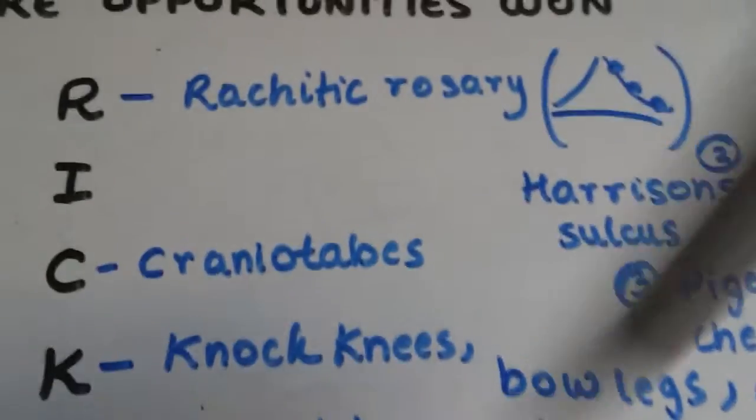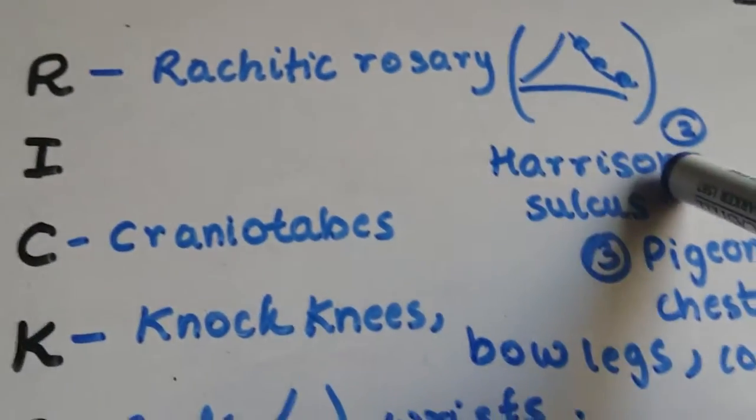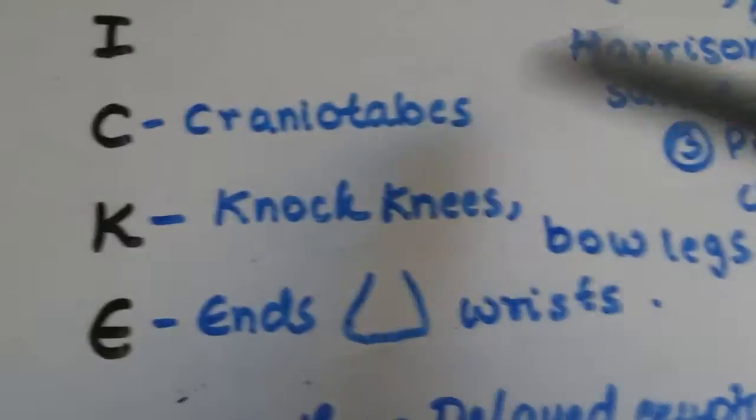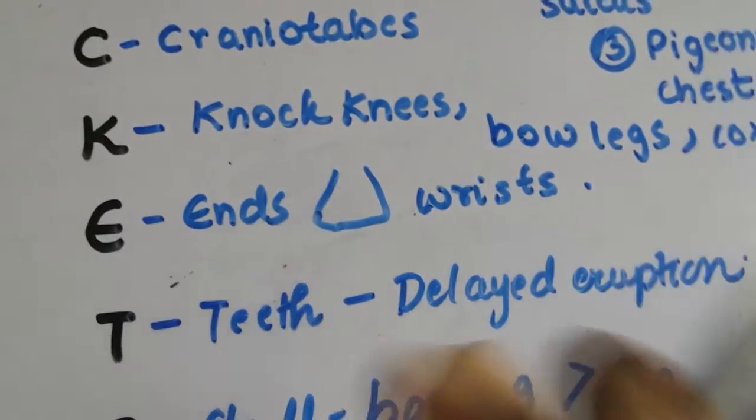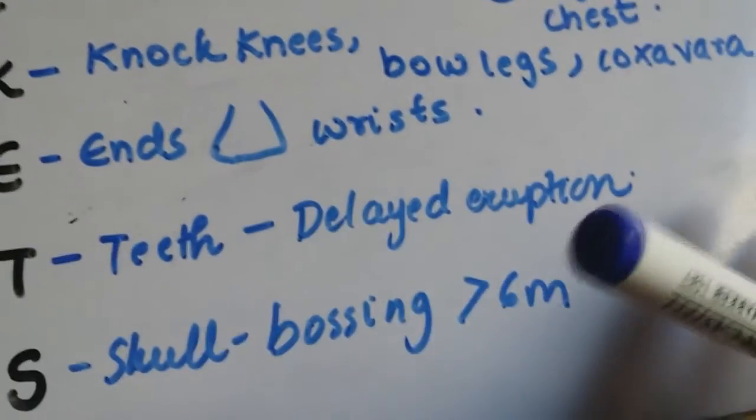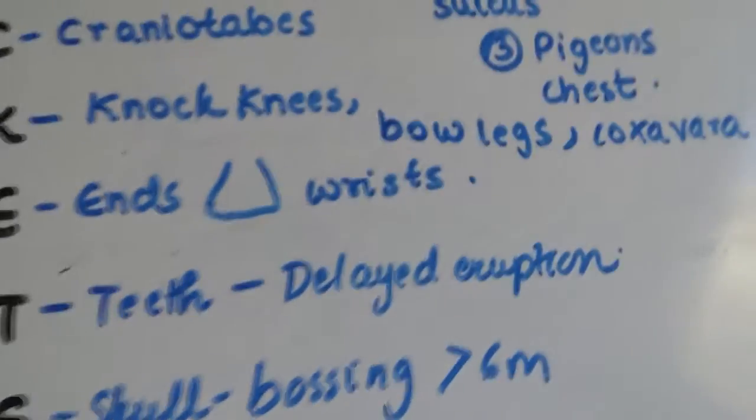A quick revision would be R for rachitic rosary, Harrison sulcus, pigeon's chest, craniotabes, knock knees, bow legs, coxa vara, ends become broadened and teeth there is a delayed eruption of teeth and there's a bossing of the skull.